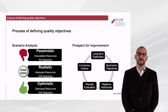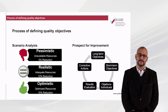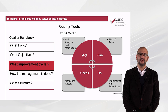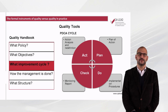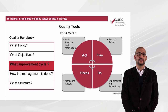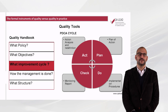This process should be carried out in the long term and during the implementation period as well — in our example, the three-year process. For all of this to be consistent, it is important to formalize it so that it can be shared by all. A structuring document for quality management systems can be a quality handbook or manual. It should respond, among other things, to the following questions: What is the quality policy? What are the quality objectives? What is the improvement cycle? How is quality management done? What is the quality structure?